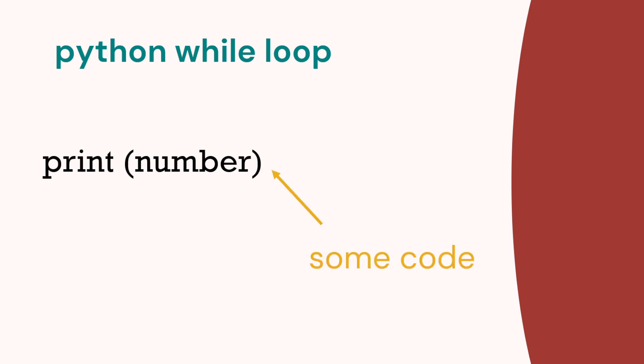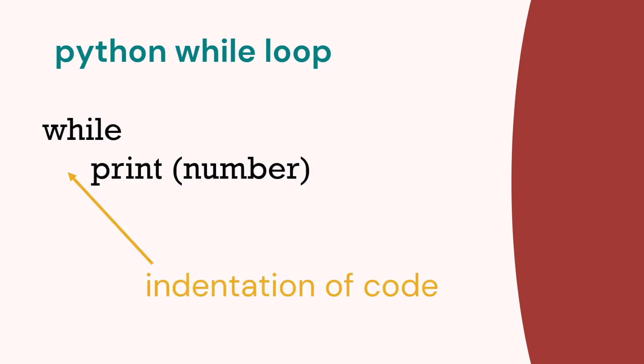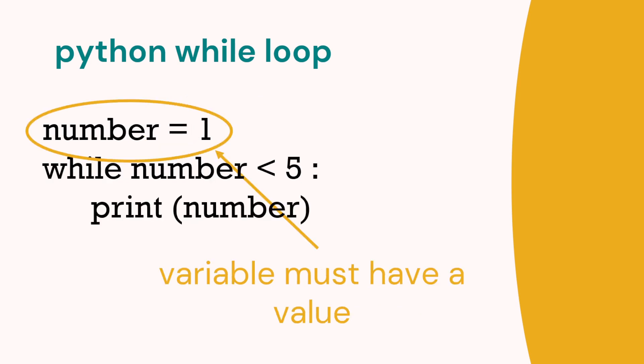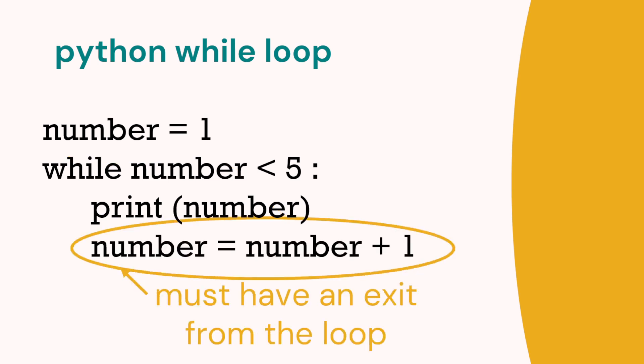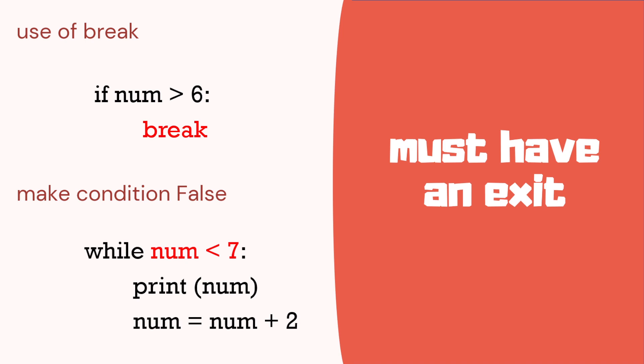So we've got a print statement. We've got the keyword while. We've got the indentation. You've got the condition that must be true or false. Now we must have that condition, the variable used, now in this case number. We must have a value to start off, and we must have a way to exit from the loop. So in our code we can see we can print 1 to 4 because number is less than 5. Once it equals 5, then it comes out of the loop.